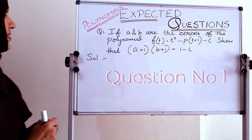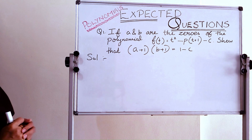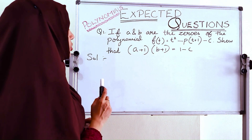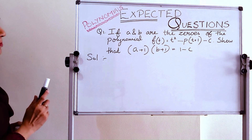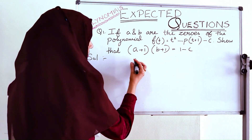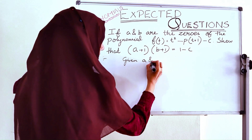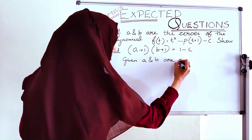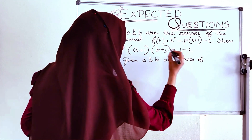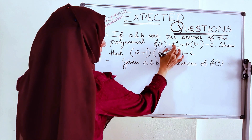Our first question is question number 1. If a and b are the zeros of the polynomial f(t) = t² − pt + (1 − c), show that (a + 1)(b + 1) = 1 − c. Given that a and b are zeros of f(t), f(t) is equal to the polynomial. So let us rearrange this f(t) first.